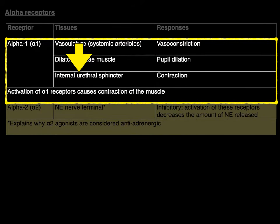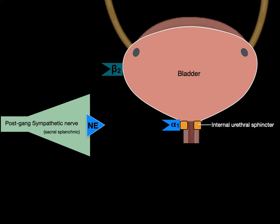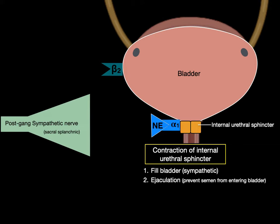Now the internal urethral sphincter — when stimulating alpha-1 receptors, causes contraction. Here is the bladder with the internal urethral sphincter at the neck of the bladder, which has an alpha-1 adrenergic receptor. So when sympathetic neurons release norepinephrine, you get contraction of the internal urethral sphincter. To fill the bladder, this is a sympathetic action, whereas parasympathetics empty the bladder. And during ejaculation, this contraction prevents semen from going back into the bladder.